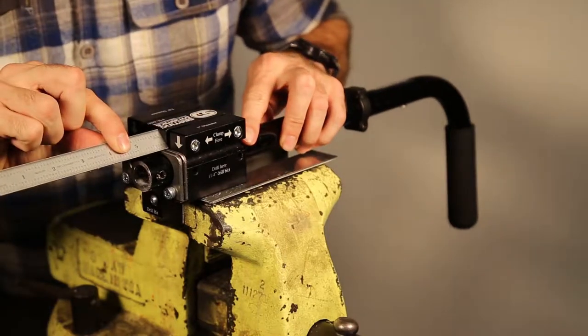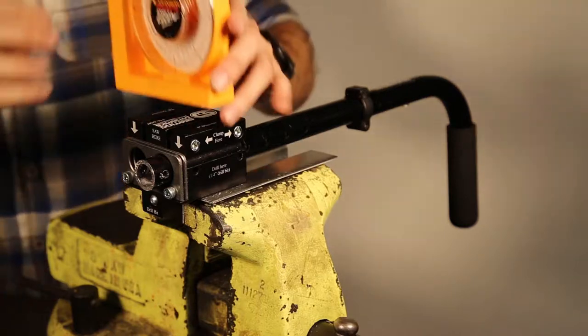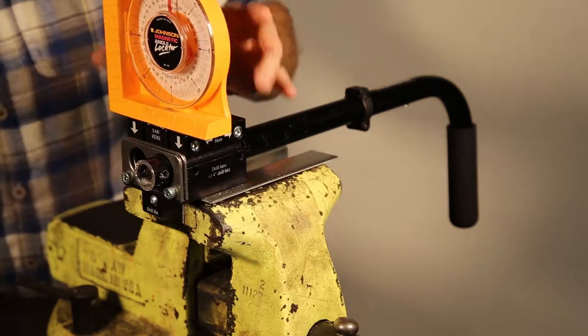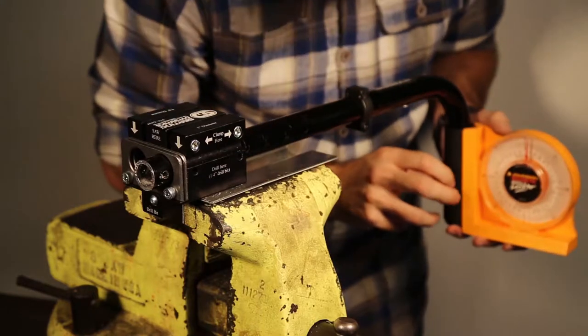Measure from the face of the drill block to the appropriate cut length. Using a level, align the back cane push handle so that it is parallel to the jig face marked clamp here.